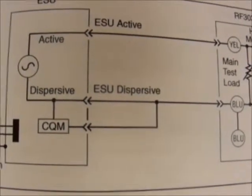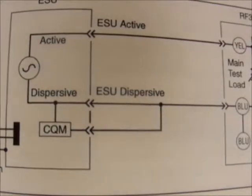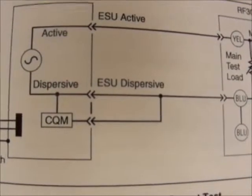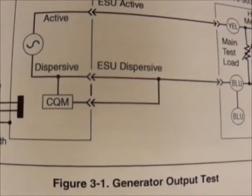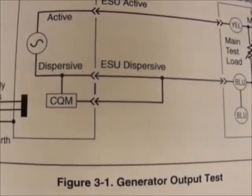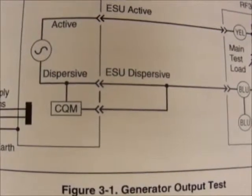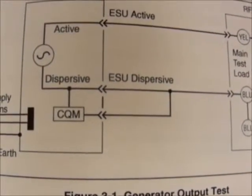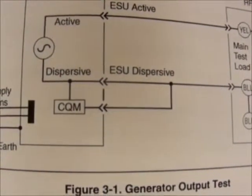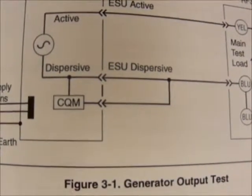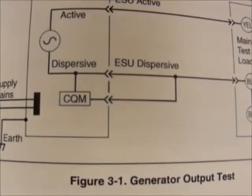A 500 ohm test load simulates body impedance, or AC resistance, of a patient or operator on the low side, while the 750 ohm simulates a high side.